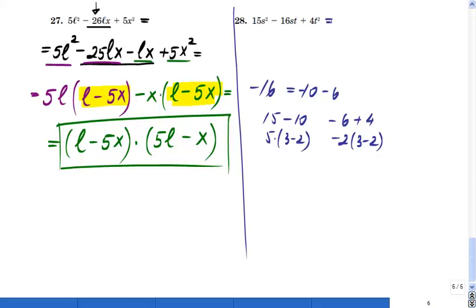Okay, so I will break this thing into what, 15s squared minus, and I'm going to write 16st as minus 10st minus 6st plus 4t squared.